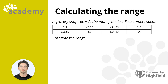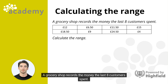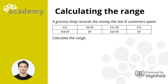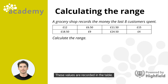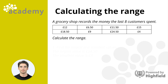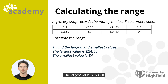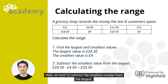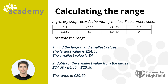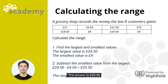Let's take a look at this example. A grocery shop records the money the last eight customers spent. Calculate the range. The largest value is £24.50 and the smallest value is £4. Subtracting: £24.50 minus £4 equals £20.50. The range is £20.50.